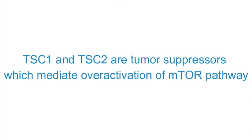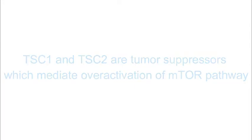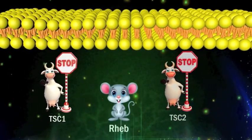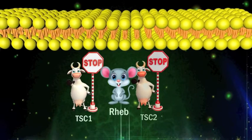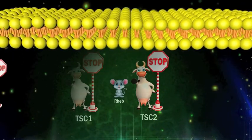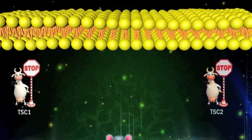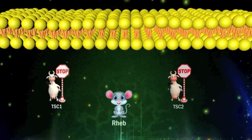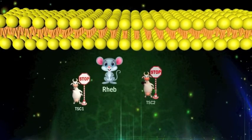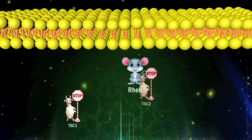TSC1 and TSC2 are tumor suppressors which mediate over-activation of the mTOR pathway. They inhibit the RAB protein, which can directly activate mTOR and AKT. Inactivation of TSC1 and TSC2 leads to over-activation of the mTOR pathway, which causes uncontrolled cell growth.